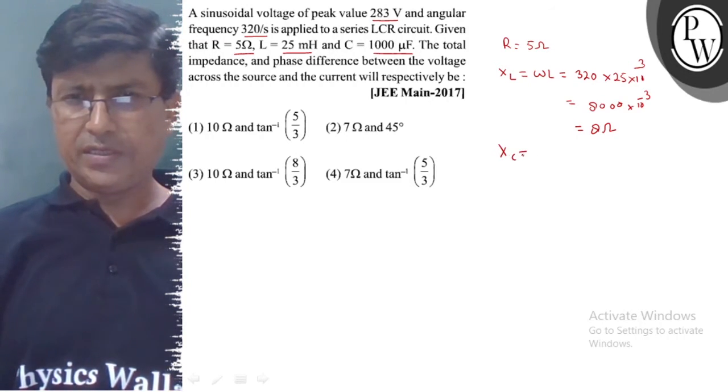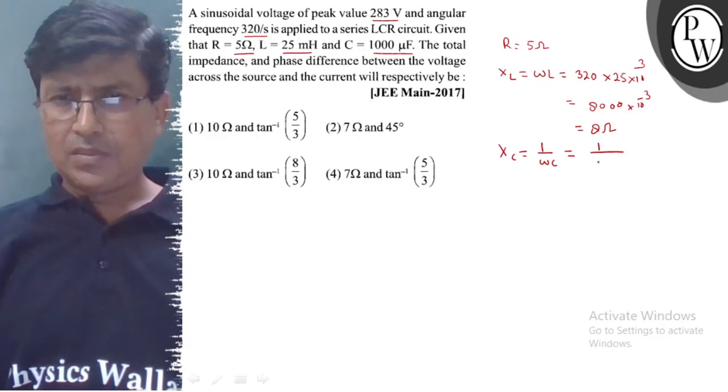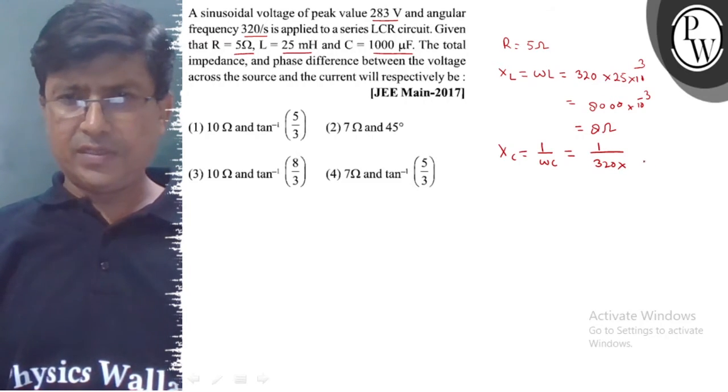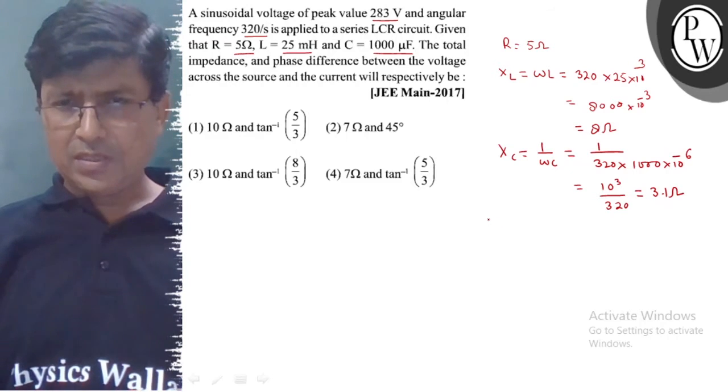Now we'll calculate XC, which is 1 upon omega C. This will be 1 upon omega, which is 320, and C's value is given as 1000 into 10 to power minus 6 microfarads. So this becomes 10 to power 3 upon 320, which equals 3.1 ohm. Now we'll find XL difference XC.